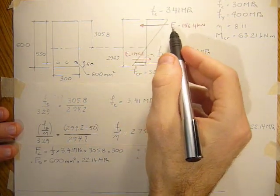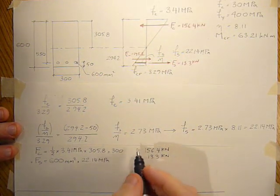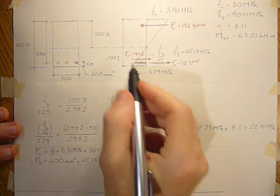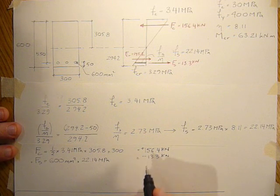And sign convention will say compressive stress on the section is positive and the steel is below the neutral axis so it's in tension. So it's negative.